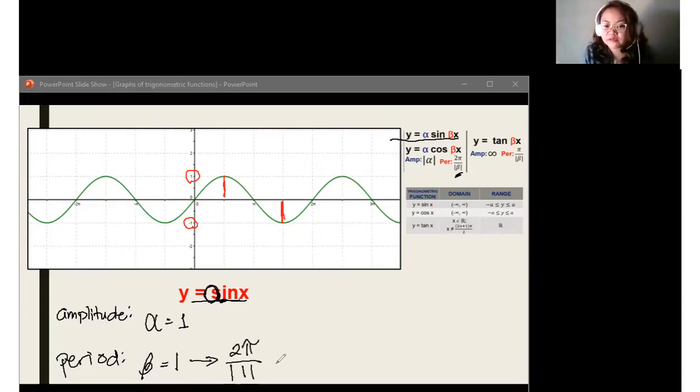So, 2 pi over the absolute value of 1. Or, if we will simplify this, 2 pi over 1 lang yan. Or simply, what will be the lowest term? Let's have Jazz. Hi, Jazz. Lowest term. 2 pi over 1. Denominator mo 1. So, ano na lang ang answer na ito? 2 pi po. Very good. Thank you. Tama rin po si Hazel, Eliza. Alright. Thank you, Jazz. We have now 2 pi.